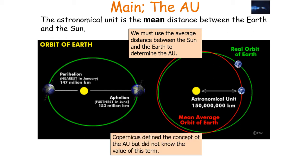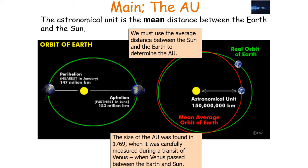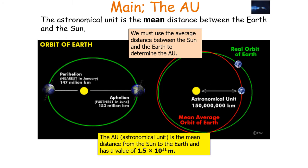Counterintuitively, the Northern Hemisphere is closer to the Sun during the winter months compared to the summer months, which is actually one reason why our summers in the Northern Hemisphere are milder than those in the Southern Hemisphere. Copernicus defined the concept of the astronomical unit, but didn't know the value of this term. The size of the astronomical unit was found in 1769, when it was carefully measured during a transit of Venus, which is when Venus passes between the Earth and the Sun from the perspective of the Earth. One astronomical unit is the mean distance from the Sun to the Earth, and we have a value of 1.5 times 10 to the 11 metres.